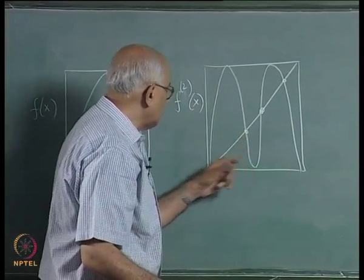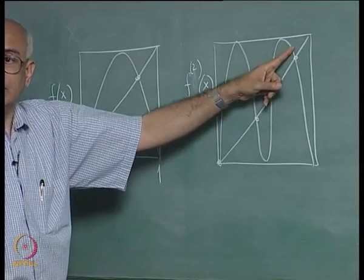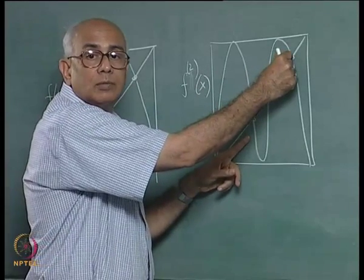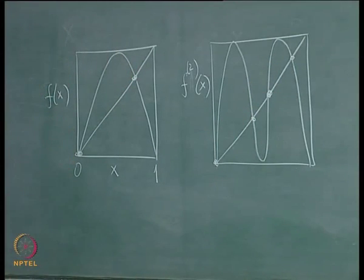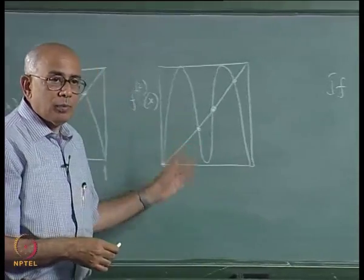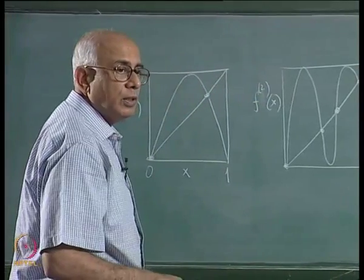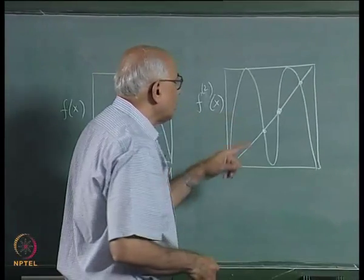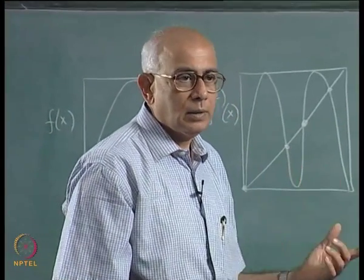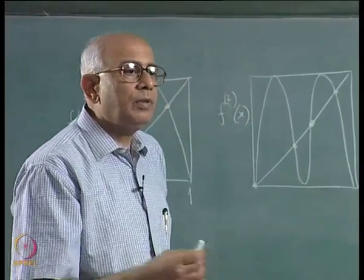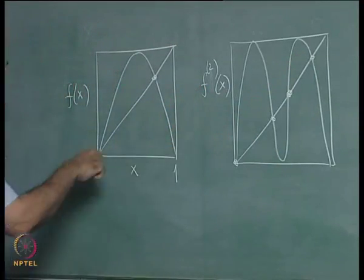The new fixed points of f² correspond to a period-2 cycle: taking one value gives the map function leading to the other, and that leads back. Period-p cycles are fixed points of the p-th iterate of the map which are not fixed points of any earlier iterate — just as a period-2 cycle is a fixed point of f² but not of f itself.